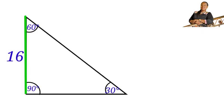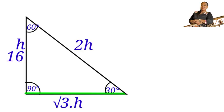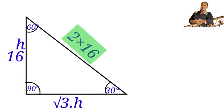Now let this side of this triangle be h. This side will be 2h, and this side will be the square root of 3 times h. So h is 16 units. This side will be 2 times 16, which gives us 32 units. And this side will be the square root of 3 times 16.